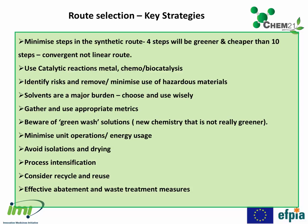Some key strategies for route selection: minimize the number of steps — cheaper and greener means fewer than ten steps. Look for convergent rather than linear syntheses. Use catalytic reactions. Identify and remove risks, and minimize the use of hazardous materials. Solvents are a major burden — choose and use them wisely. Gather and use appropriate metrics, and be aware of green chemistry solutions. Minimize unit operations and energy usage. Avoid isolation and drying if possible. Think about process intensification — things like flow chemistry. Consider where we can reuse and recycle. And we'll never remove all waste, so think about effective abatement and waste treatment measures.